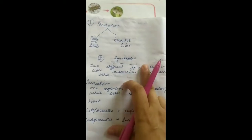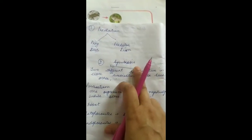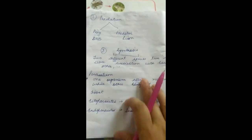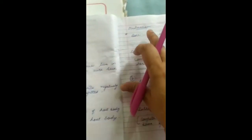Second one is symbiosis. Two different species living in close association with each other is known as symbiosis. Symbiosis is further divided into parasitism, mutualism, and commensalism.